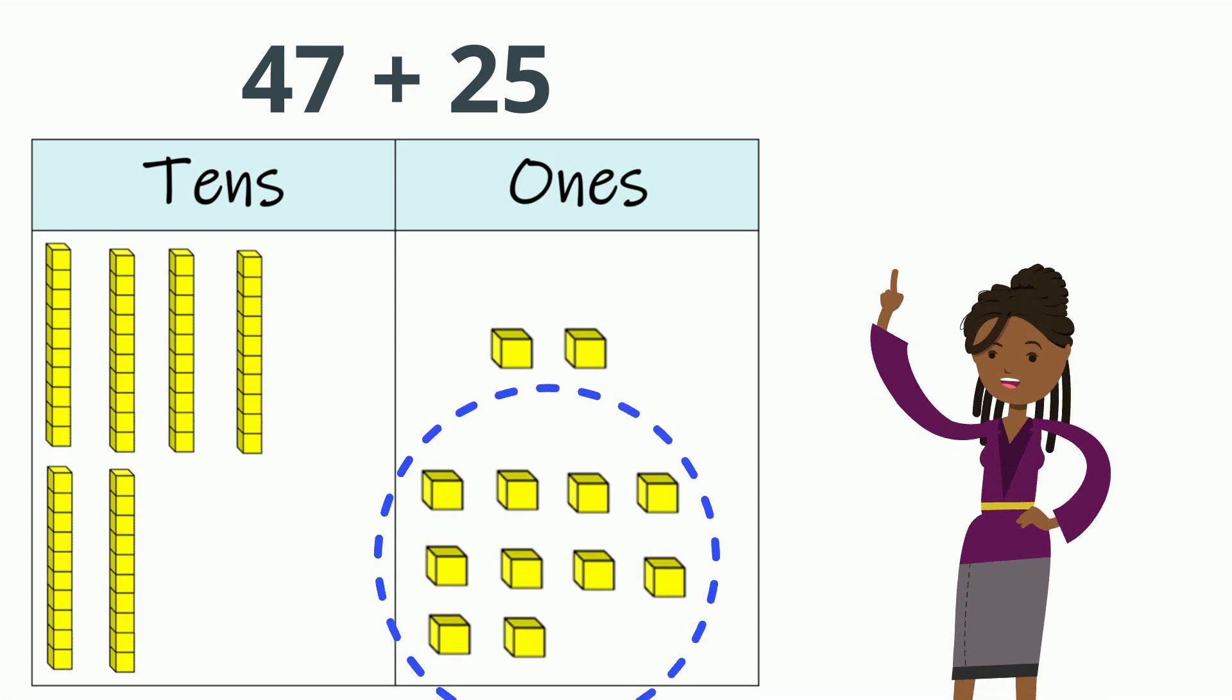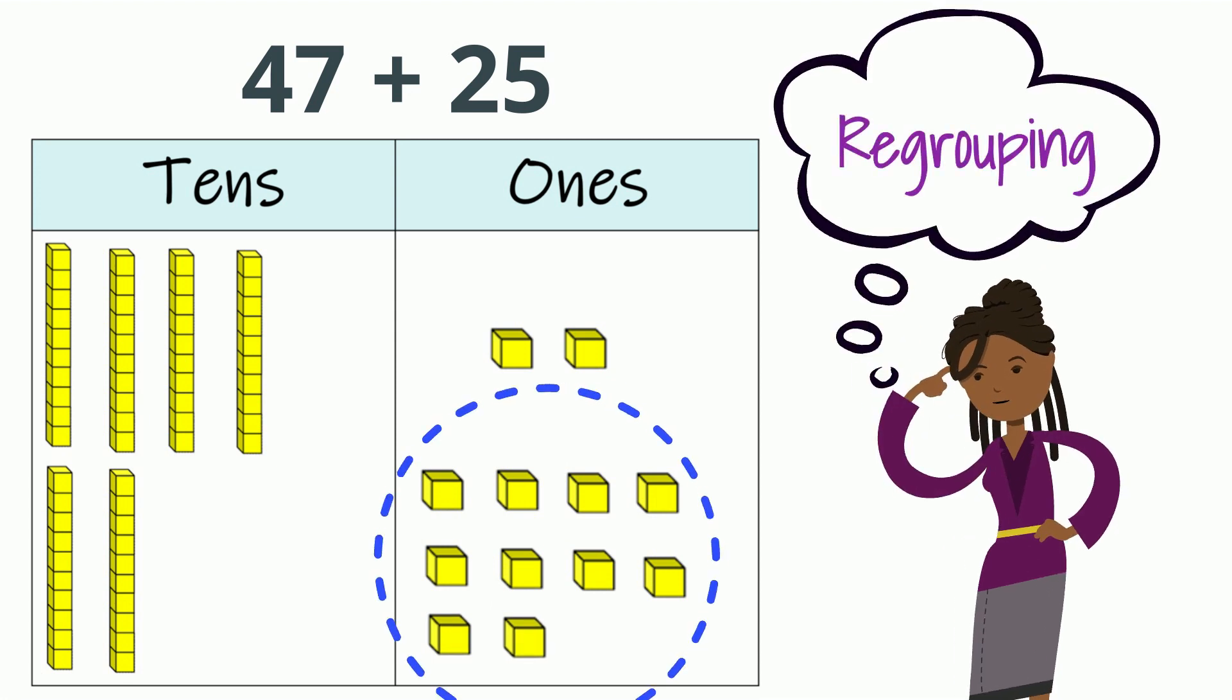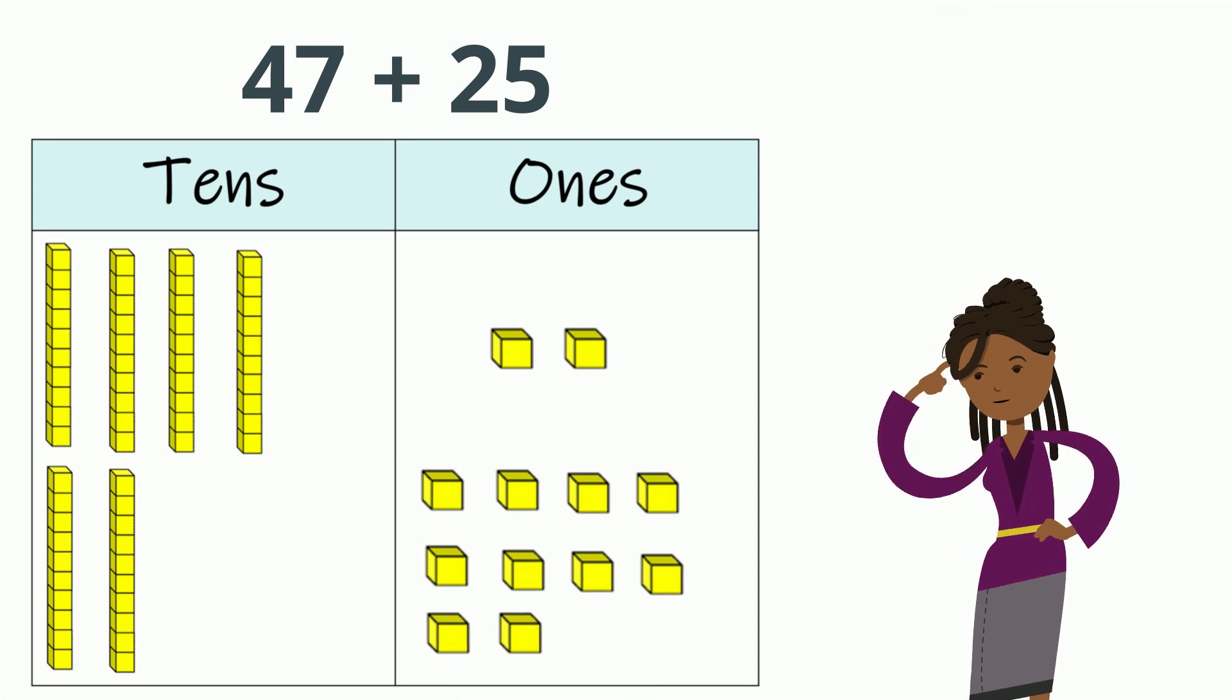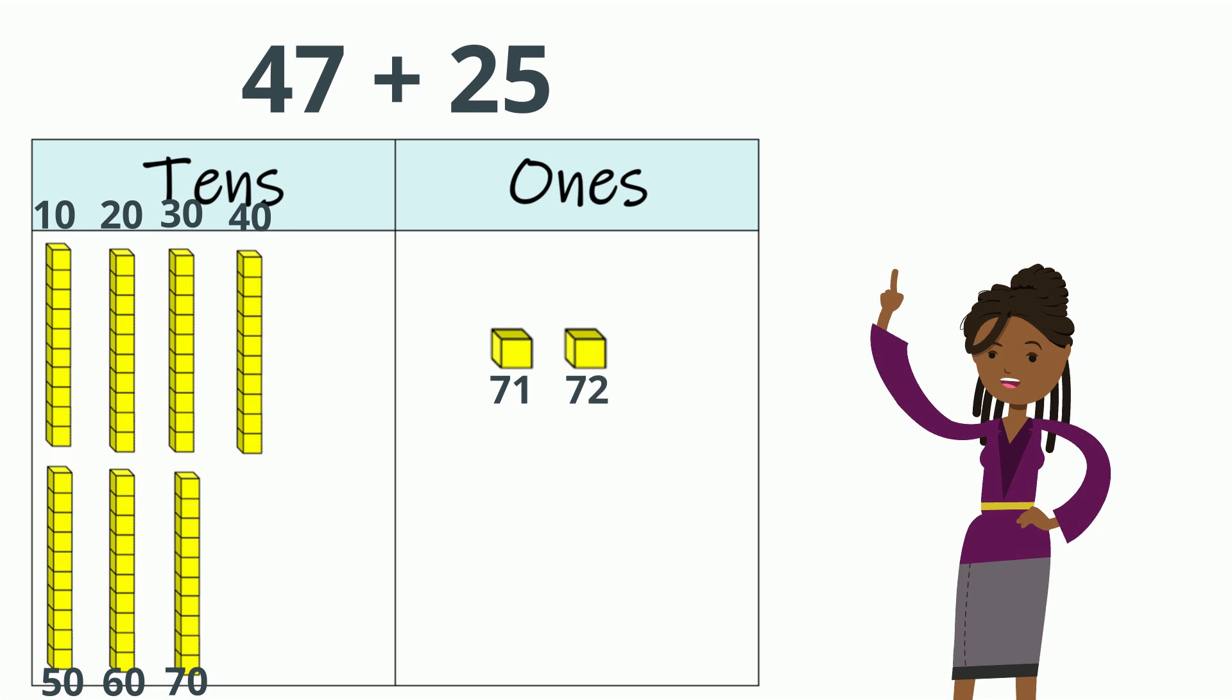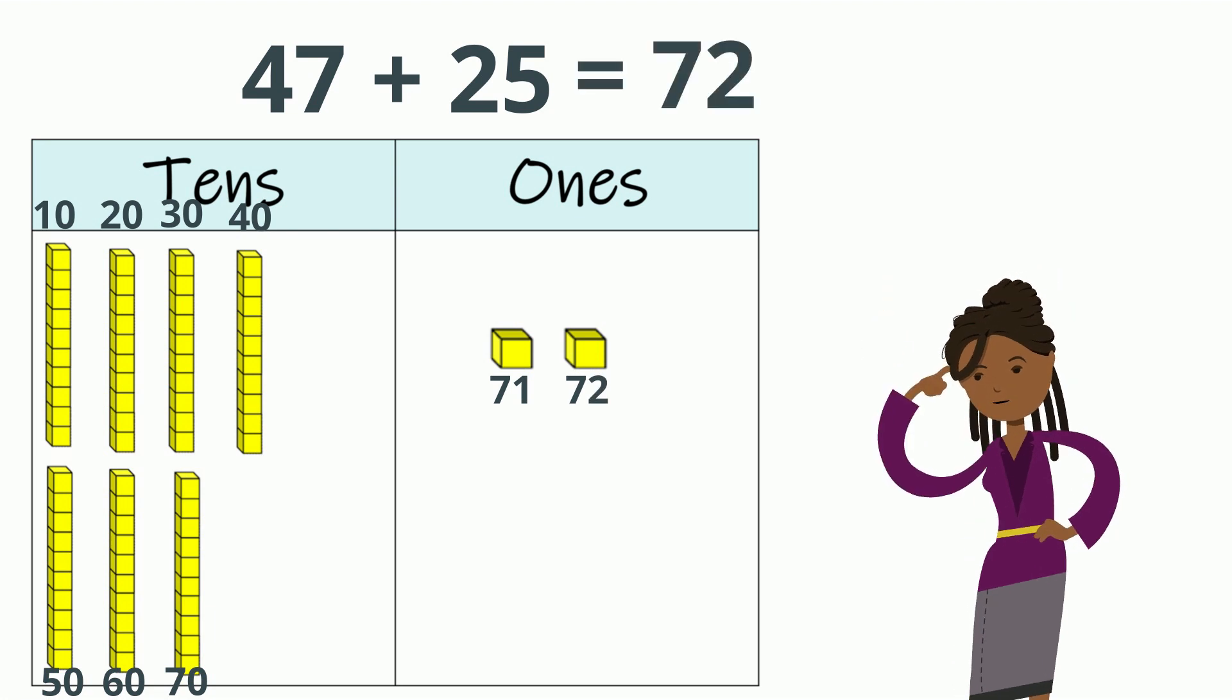I see 12, so I can group 10 of them. Now, let's count our answer together once we regroup. 10, 20, 30, 40, 50, 60, 70, 71, 72. The answer or sum is 72.